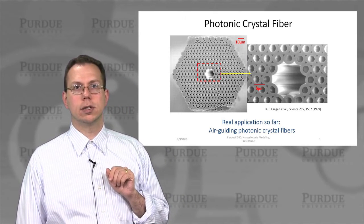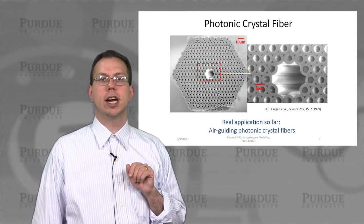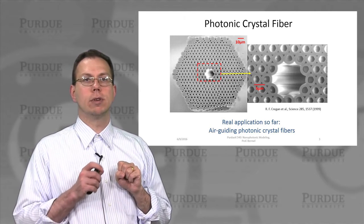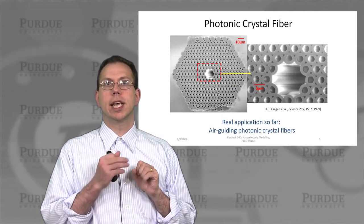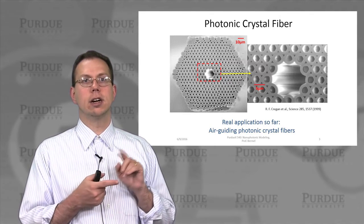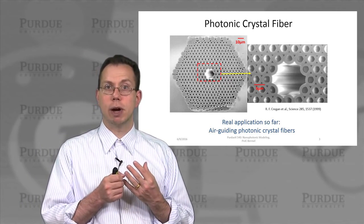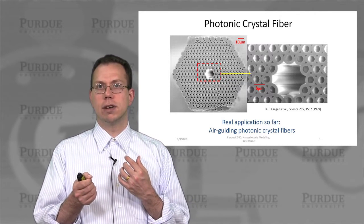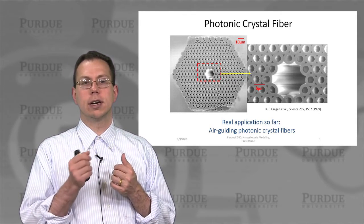Another interesting photonic crystal structure is the so-called photonic crystal fiber. You can use either 1D periodic or 2D periodic structures and roll them into a fiber. What's nice about these photonic crystal fibers is that they can guide light in air. One advantage is that it reduces losses and absorption, so for a very high-powered laser you don't have to absorb that light as you would in a standard fiber optic, and it can be flexible enough to use for surgery or other therapeutic applications.